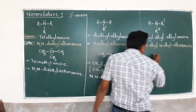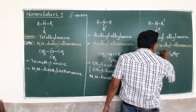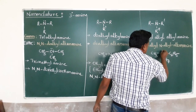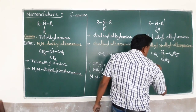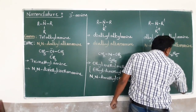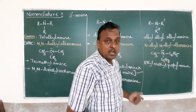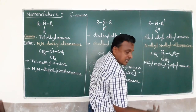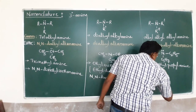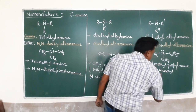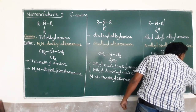The last case: consider all three alkyl groups are different — CH3 (methyl), C2H4 (ethyl), and C3H7 (propyl). Based on alphabetical order, the common name is ethyl methyl propyl amine. In IUPAC, the longest chain is propyl (propanamine), and the substituents on nitrogen are listed alphabetically: N-ethyl-N-methylpropanamine.